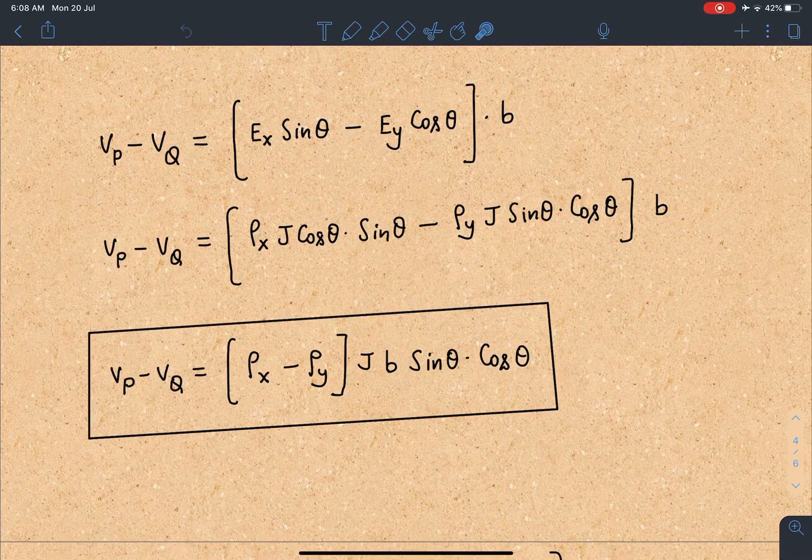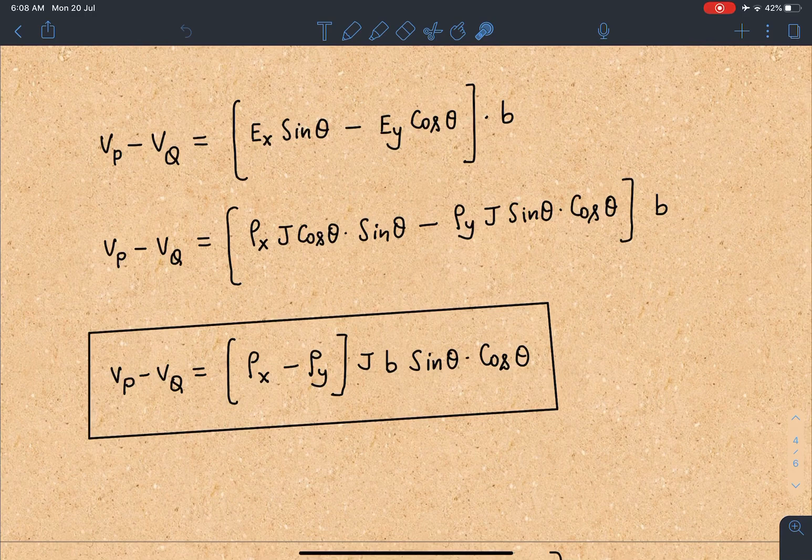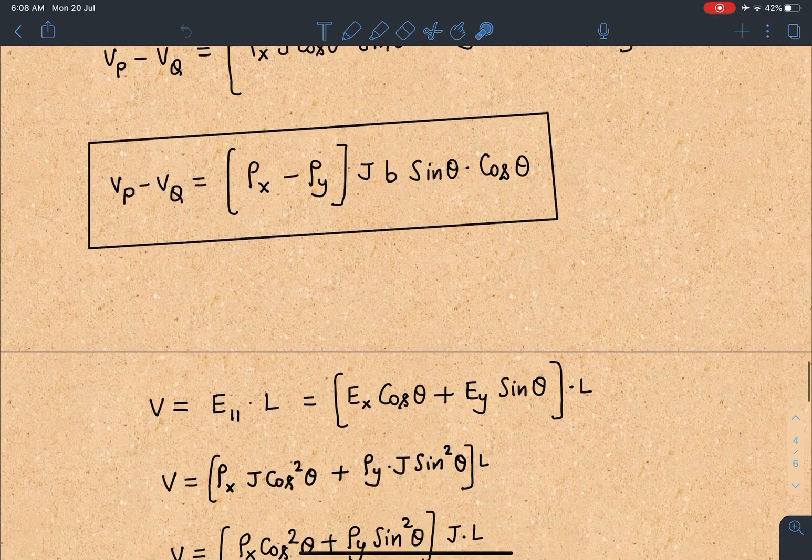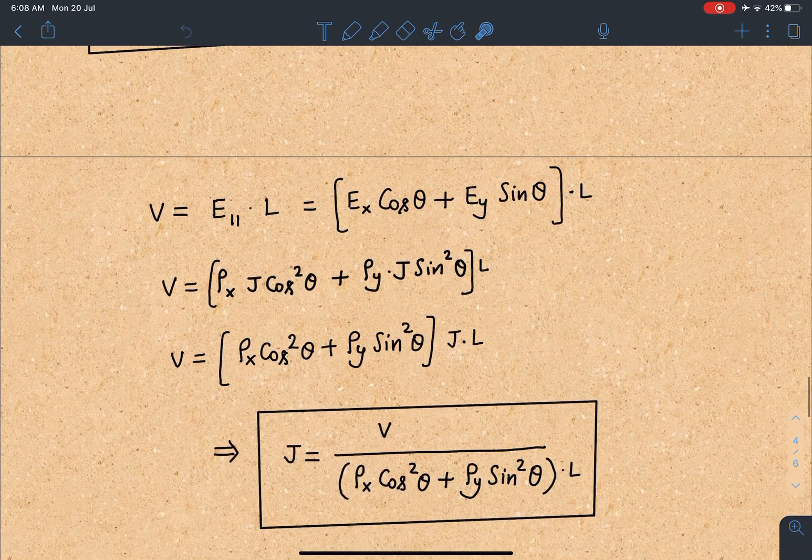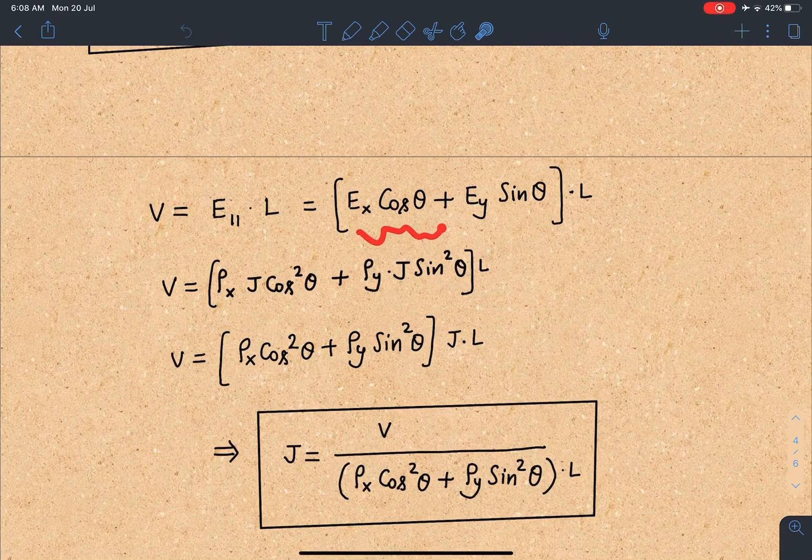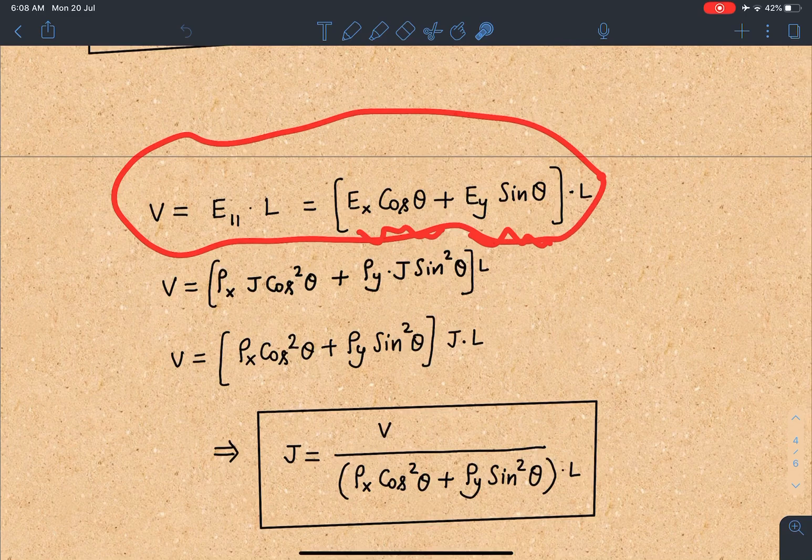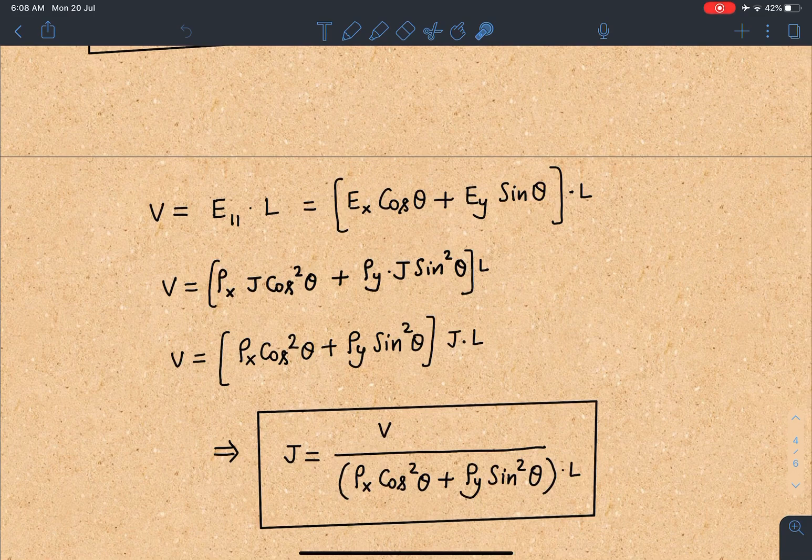Next task is to remove or eliminate it somehow. For that purpose we haven't used the value of E_parallel yet, so let's go to that now. Battery voltage = E_parallel × L, that becomes E_x cos θ + E_y sin θ times L as we have seen earlier. When I substitute the value of E_x and E_y, I am going to get this J value.